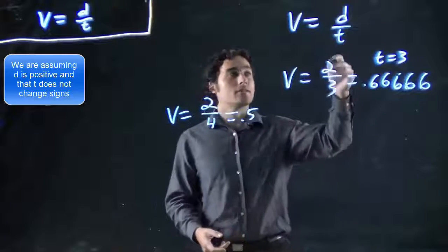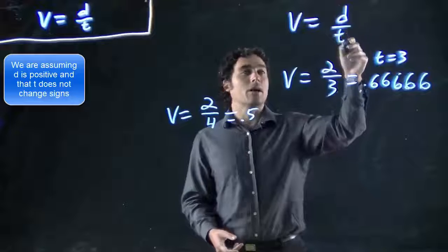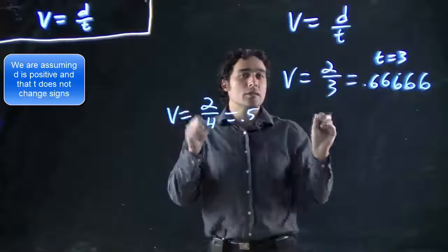Which actually makes sense when we look at the formula. Since t is on the bottom, these are what we call inversely proportional.